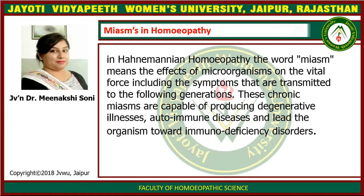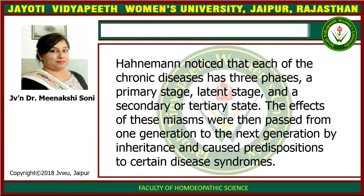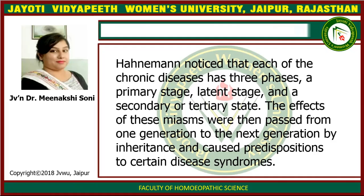These chronic miasms are capable of producing degenerative illnesses and autoimmune diseases that lead the organism toward immunodeficiency disorders. Miasms influence the vital force. Hahnemann noticed that each chronic disease has three phases: a primary stage, a latent stage, and the secondary and tertiary stage. The effects of these miasms are passed from one generation to the next by inheritance, causing predispositions to certain diseases and syndromes.